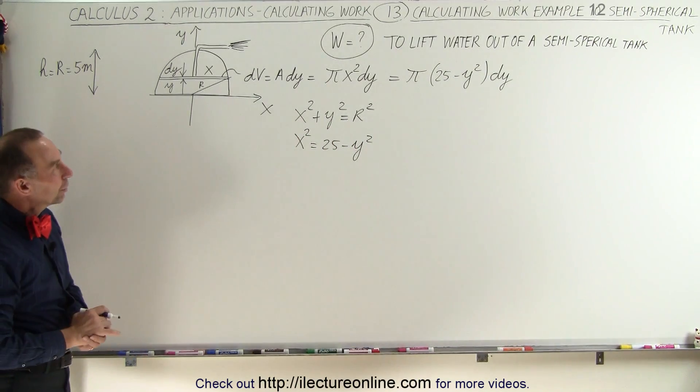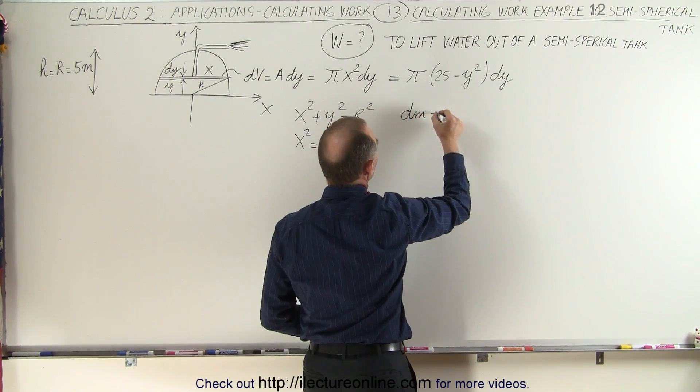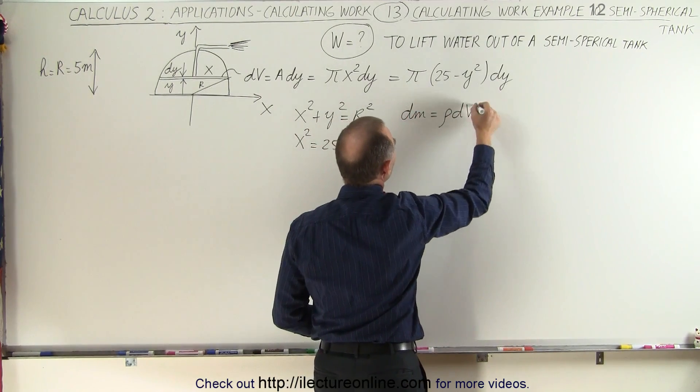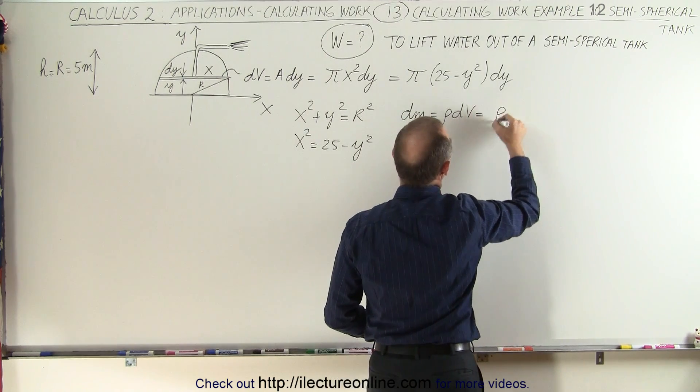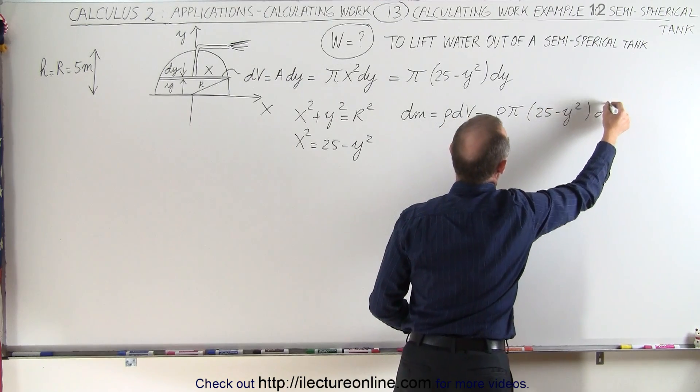Now to find the mass of that, we can say that dm equals the density times dV. So this would be equal to the density times π times (25 - y²) dy.